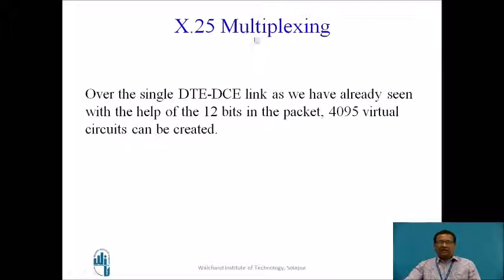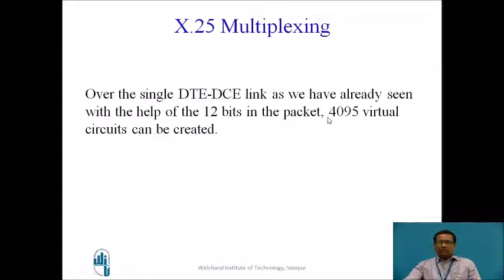Now let us go to another important feature of X.25: multiplexing. Over a single DTE-DCE link, with the help of 12-bits in the packet — 4 from group and 8 from the channel — a total of 4095 virtual circuits can be created, which are used for multiplexing the channel.